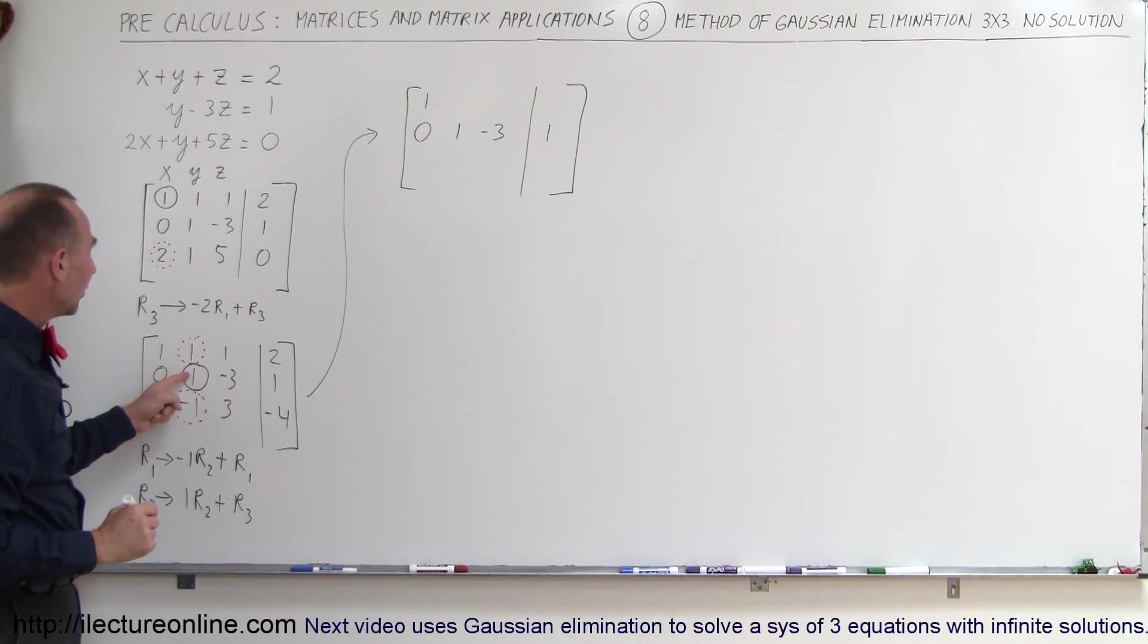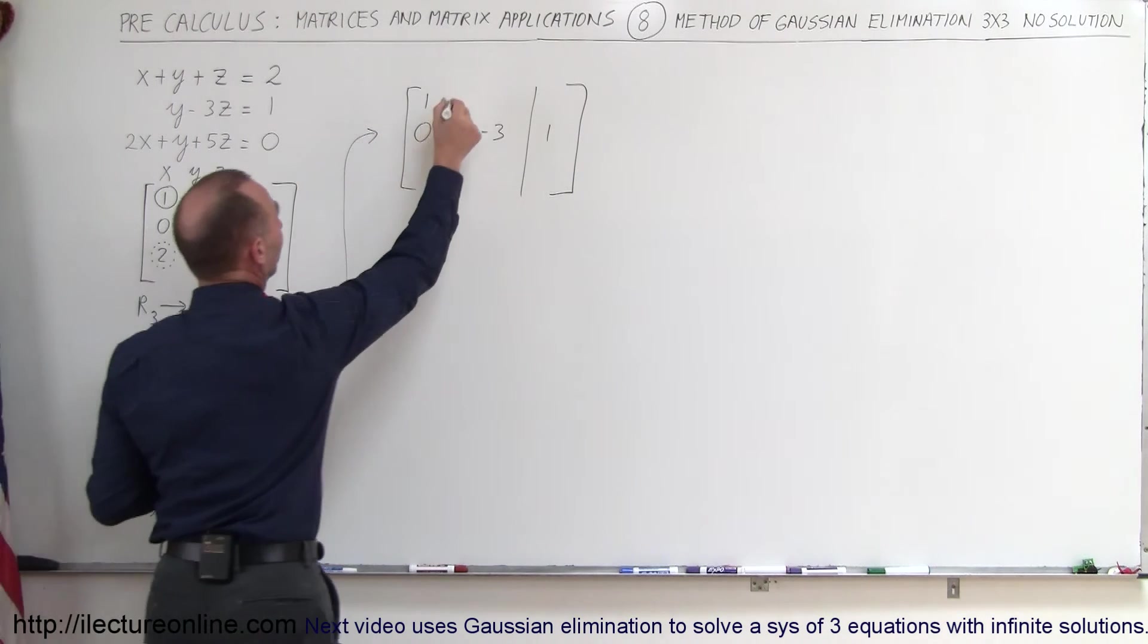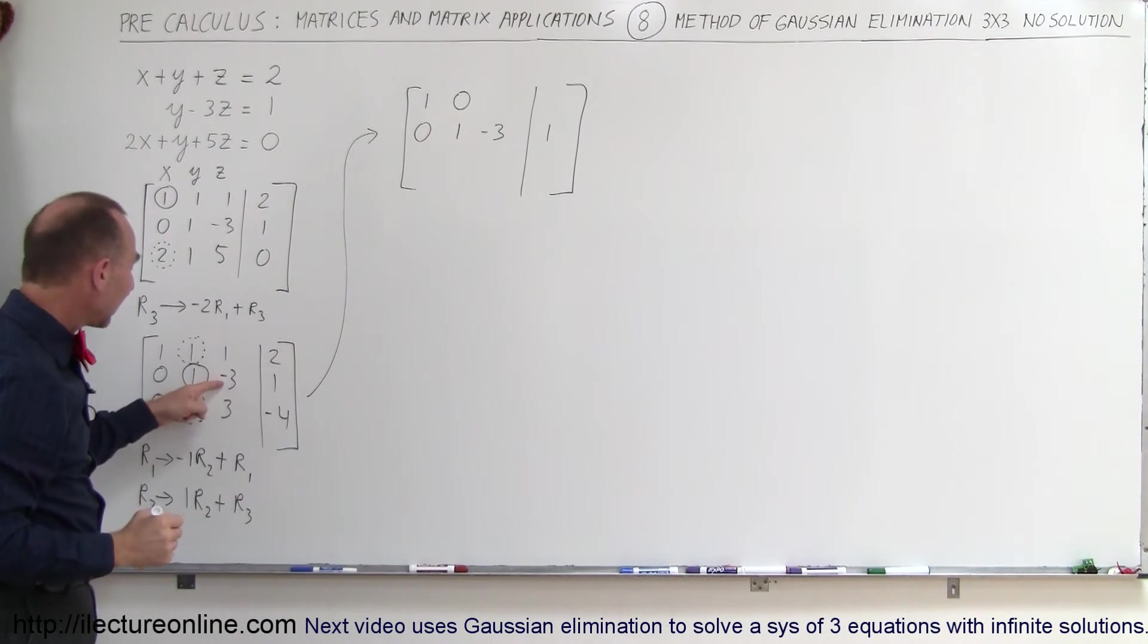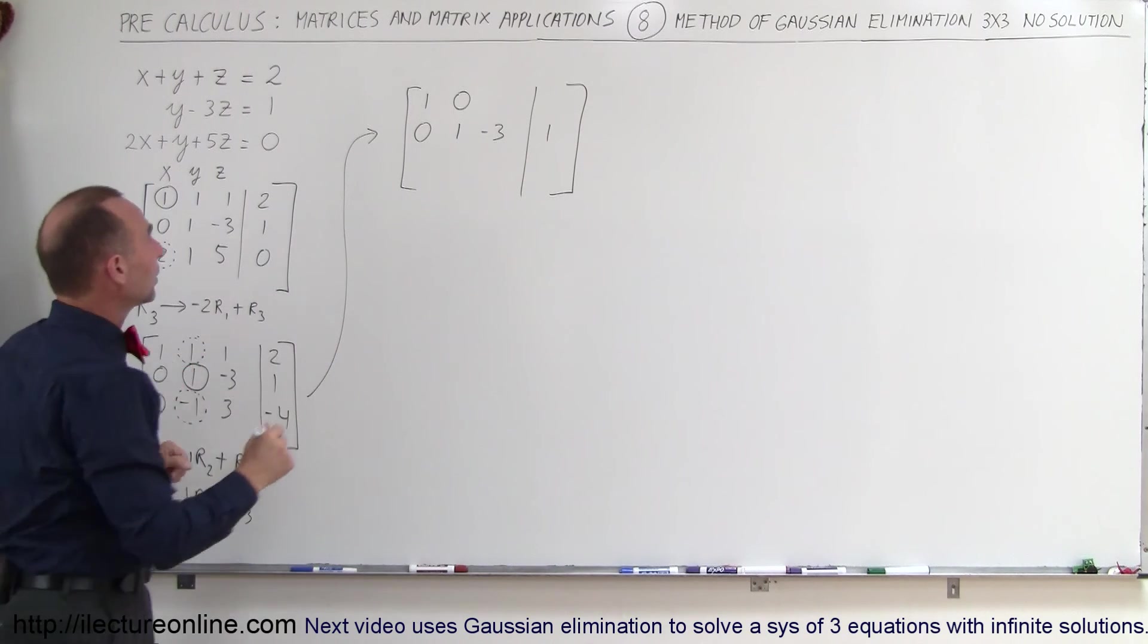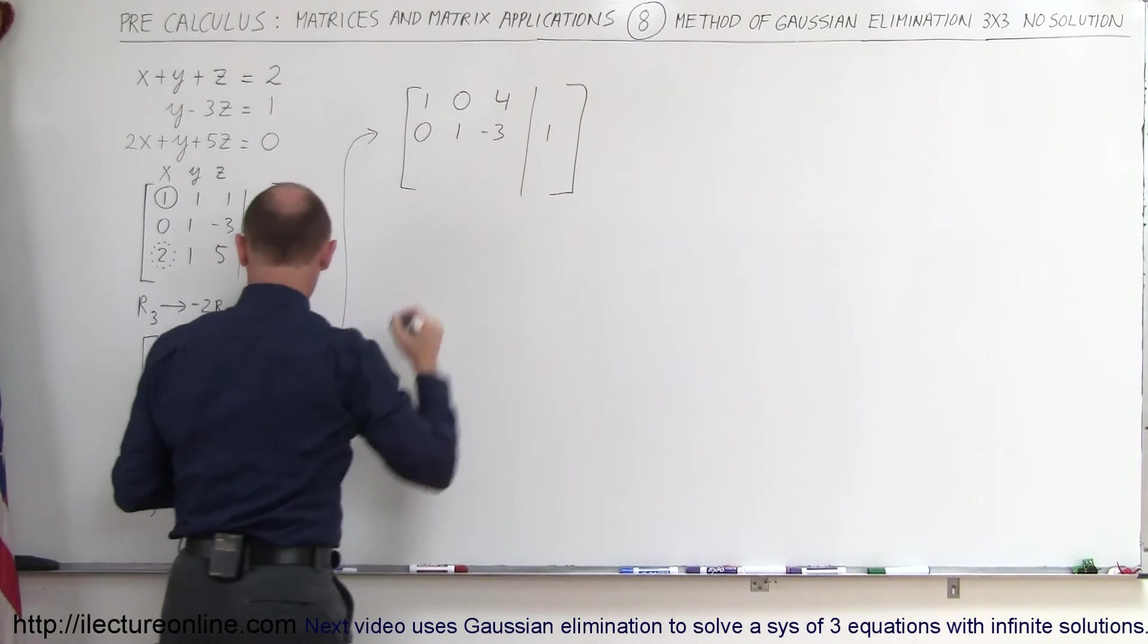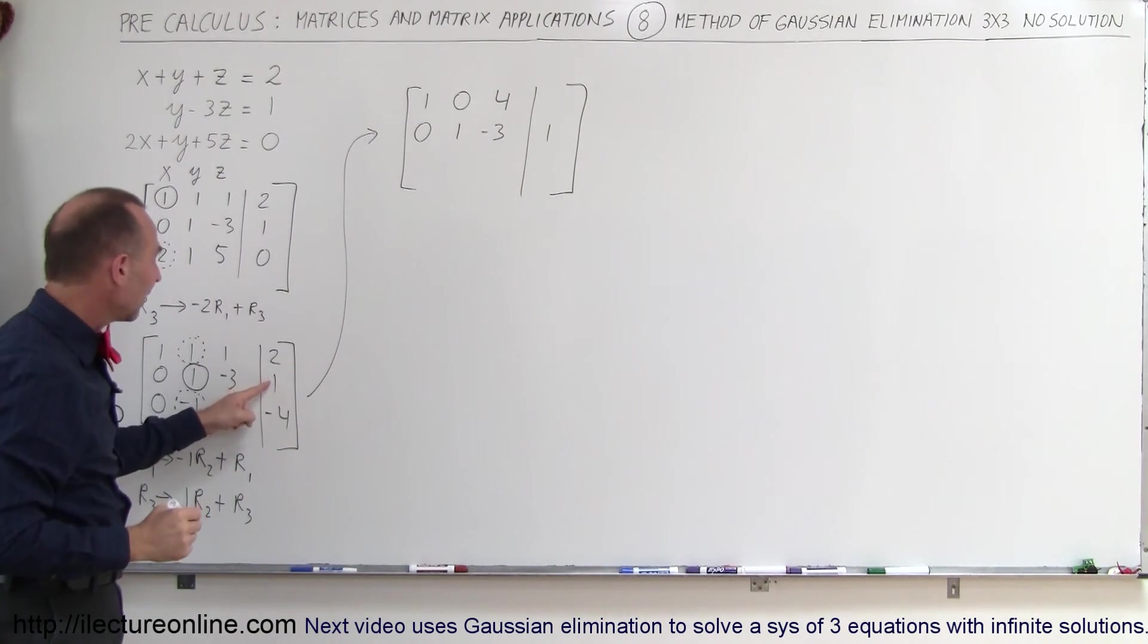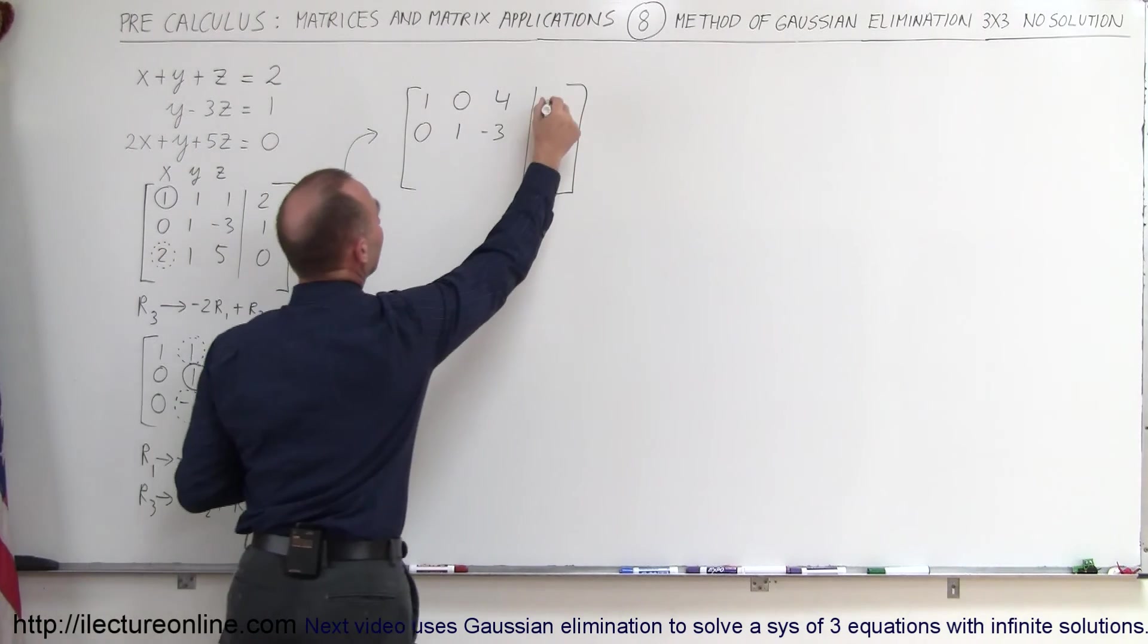Negative 1 times 1 is a negative 1, added to 1 gives me 0. Negative 1 times a negative 3 is a positive 3, added to 1 becomes a 4. Negative 1 times a 1 is a negative 1, added to 2 gives me a 1.